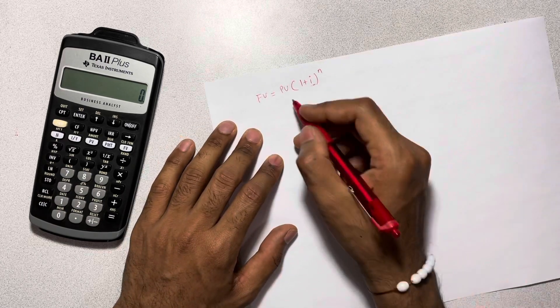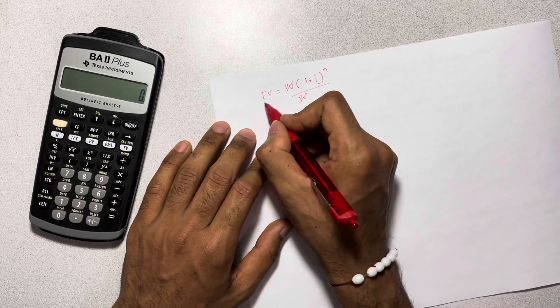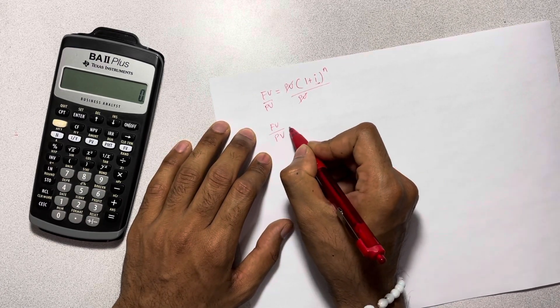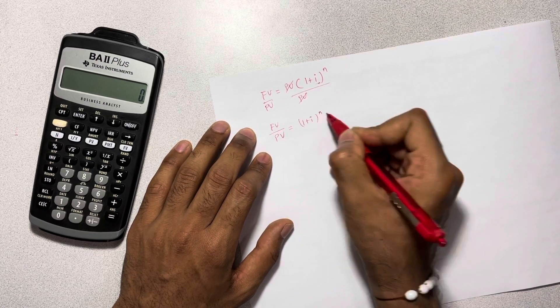So the first thing we do here is divide both sides by present value. Therefore, we have future value divided by present value is equal to 1 plus i to the power of n.